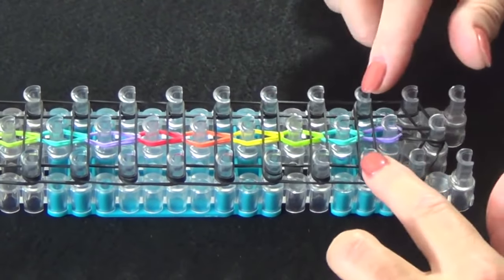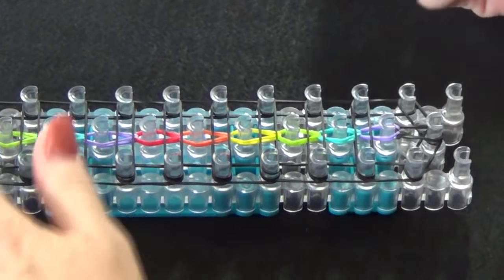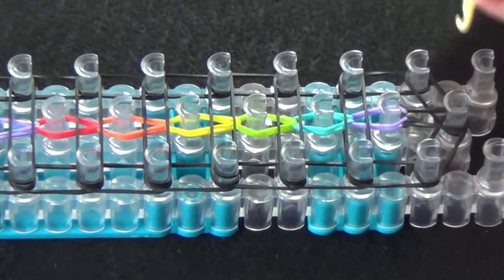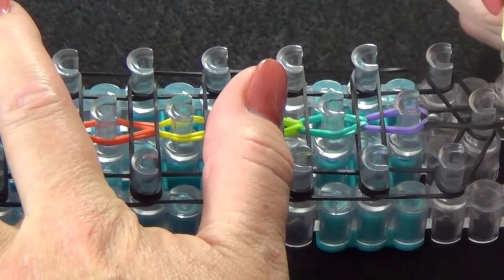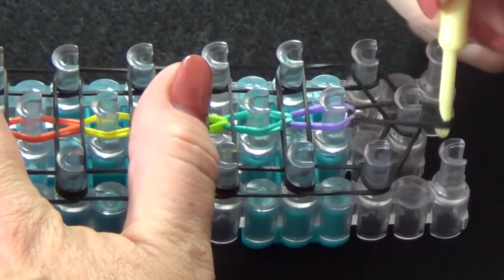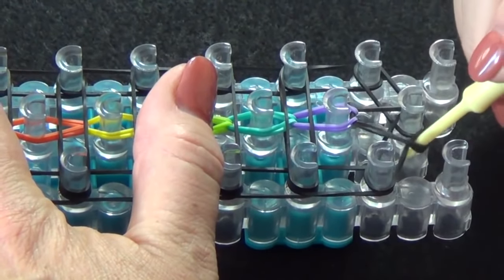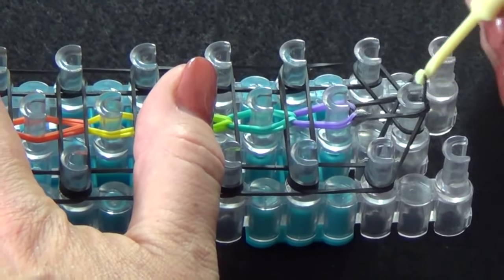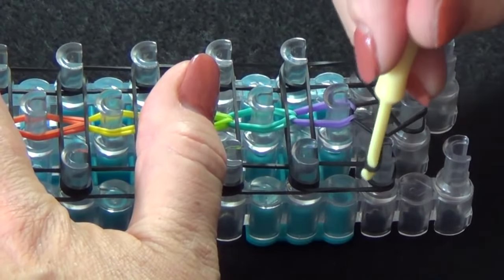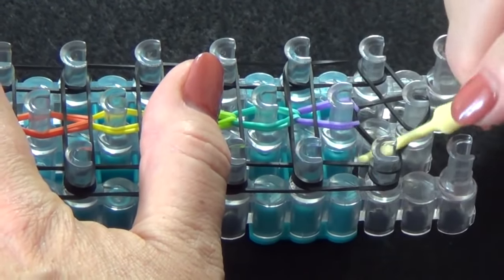Once all the bands have been placed, you're ready to loop the exterior sides for this bracelet. Again, you'll use the back side of the hook. You'll pull back this black cap band. Grab this rubber band and pull it out to the left side of your loom.